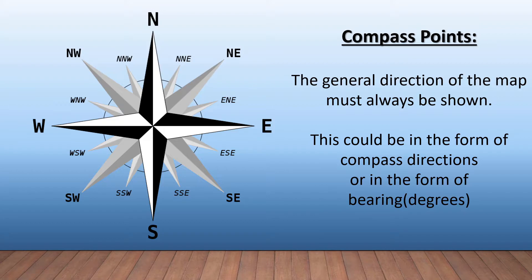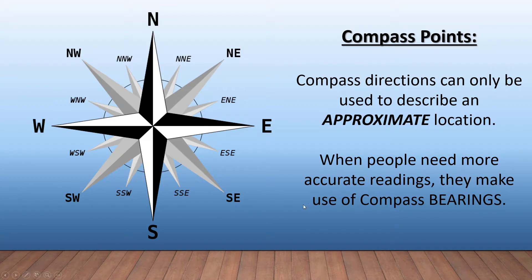This must be shown on the map otherwise you won't know — you'll have no idea. Compass directions can only be used to describe an approximate location, so please bear this in mind especially when you read through your scenarios. When people need more accurate readings they make use of compass bearings.